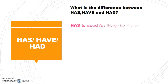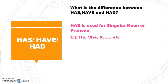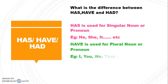Has is used for singular noun or pronoun. For example, he has, she has, it has, etc. Have is used for plural noun or pronoun. For example, I, you, we, they.